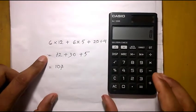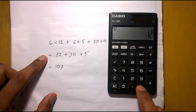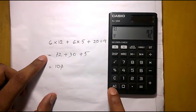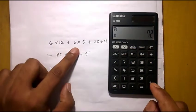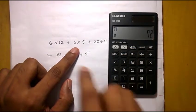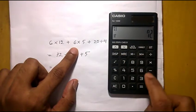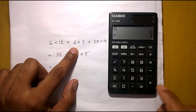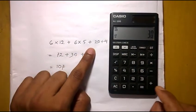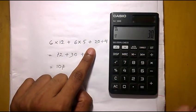Press 6 into 12 equal. Do not press AC. Now put the second part, 6 into 5. Do not press AC.